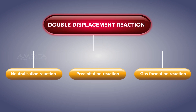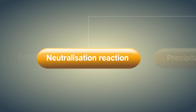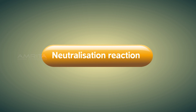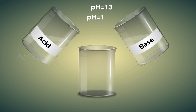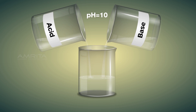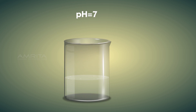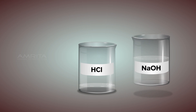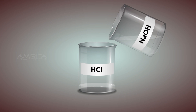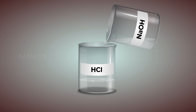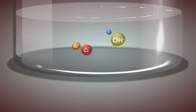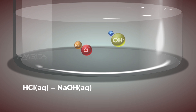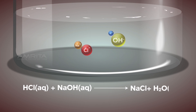In a neutralization reaction, an acid and base react to form a salt, which is neutral in nature, and water. On mixing an aqueous solution of hydrochloric acid with an aqueous solution of sodium hydroxide, sodium chloride and water are obtained: HCl + NaOH → NaCl + H₂O.